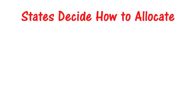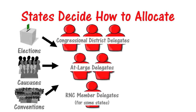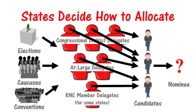The RNC gives states the ability to decide how candidates win the delegates. Therefore, some states hold primary elections, some hold caucuses, and a few just hold statewide conventions. In any system, most states require the delegates selected to be bound to a particular candidate, meaning they must support that candidate at the National Convention.